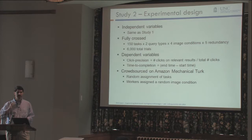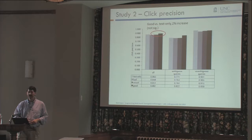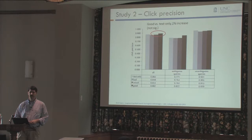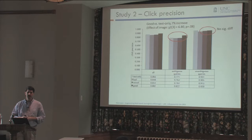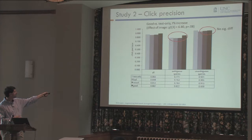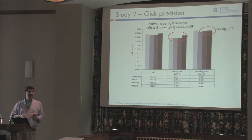We measured click precision: every time you clicked on a result to go to an underlying page, we recorded it. Ideally you only click once, finding a relevant result immediately. Click precision takes the number of clicks on relevant results divided by total clicks. We also measured time to completion. The results again showed a very small benefit — about a 2% increase for good images across all tasks, though not significant. When broken up by ambiguous versus unambiguous, there was a bump in the ambiguous case — about 7% increase for good images, borderline significance. In the unambiguous case, there was really no difference.